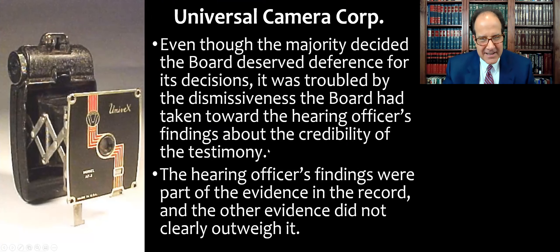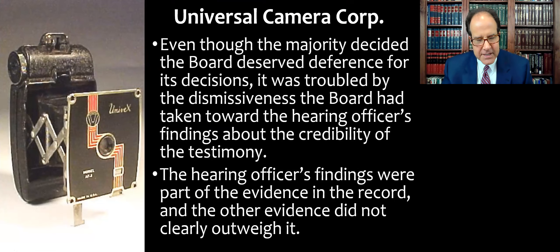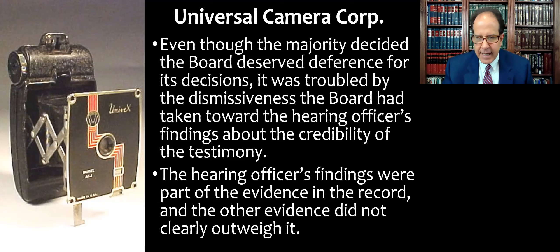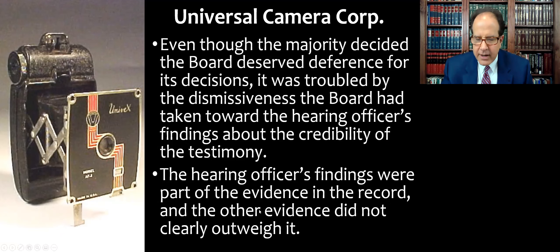Even though the majority decided that the board here deserved deference for its decisions, it was troubled by the dismissiveness the board had shown toward the hearing officer's findings about the credibility of the testimony. The hearing officer had actually talked to these people, heard them speak, and found the employer more believable than the employee with his elaborate conspiracy theory about how everyone was out to get him. The board didn't have those two people in front of them and reached the opposite conclusion just from reading transcripts. The hearing officer's findings were part of the evidence in the record, and in Justice Frankfurter's language, the other evidence simply didn't outweigh that.